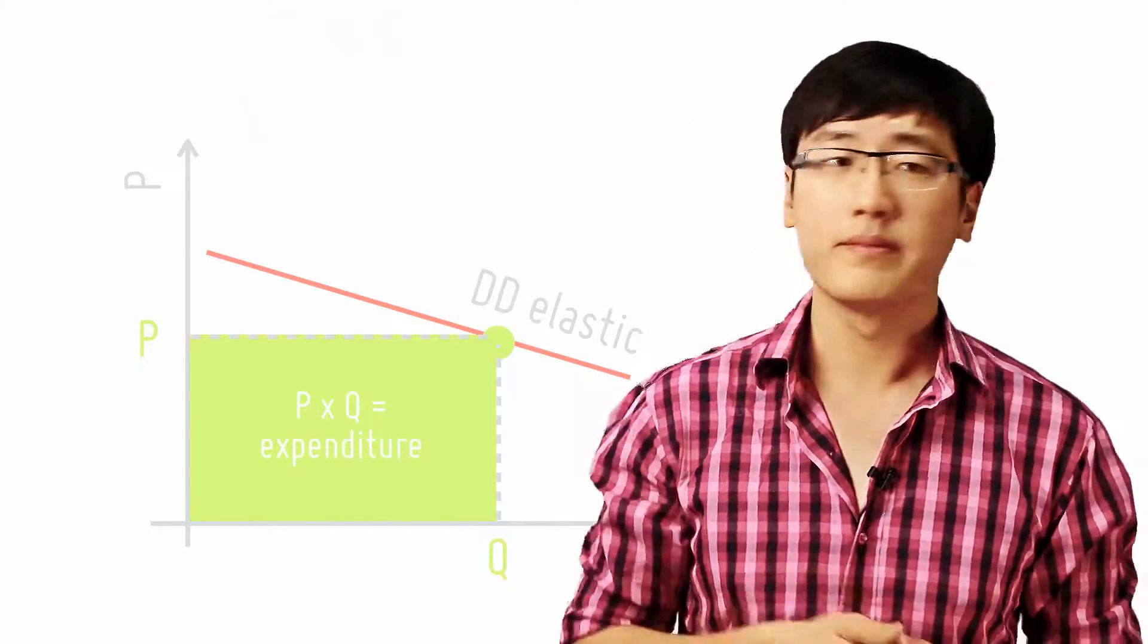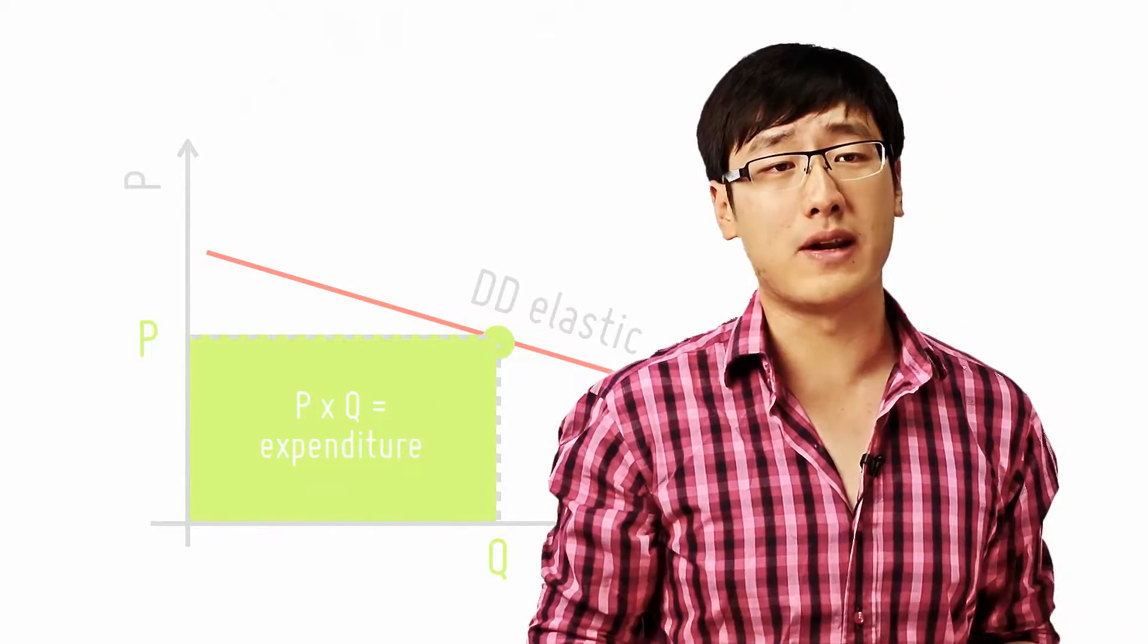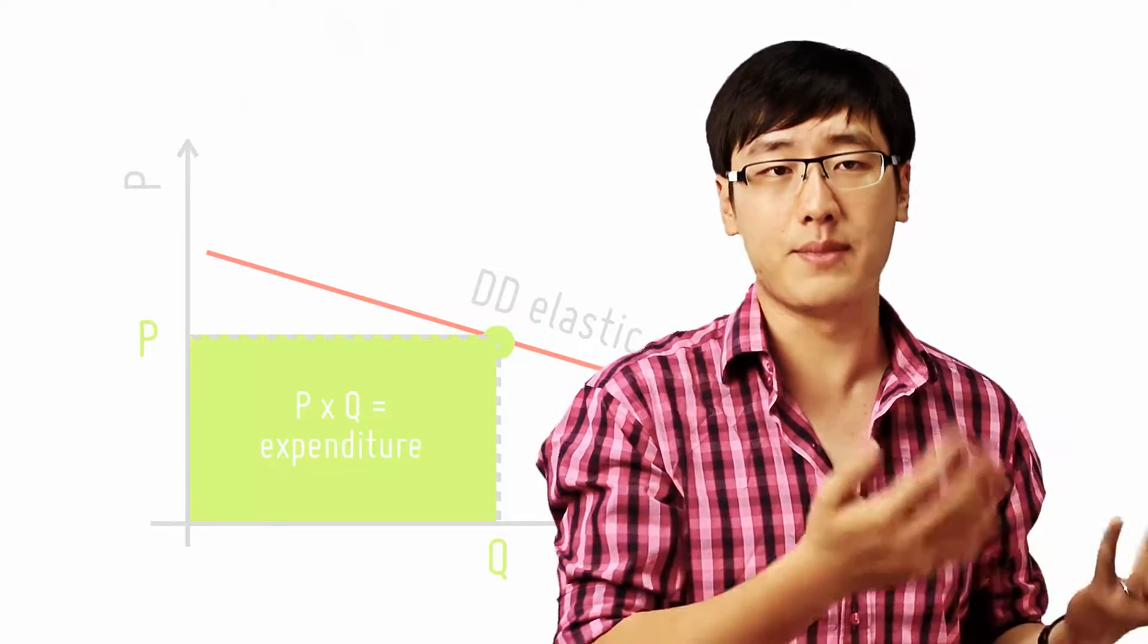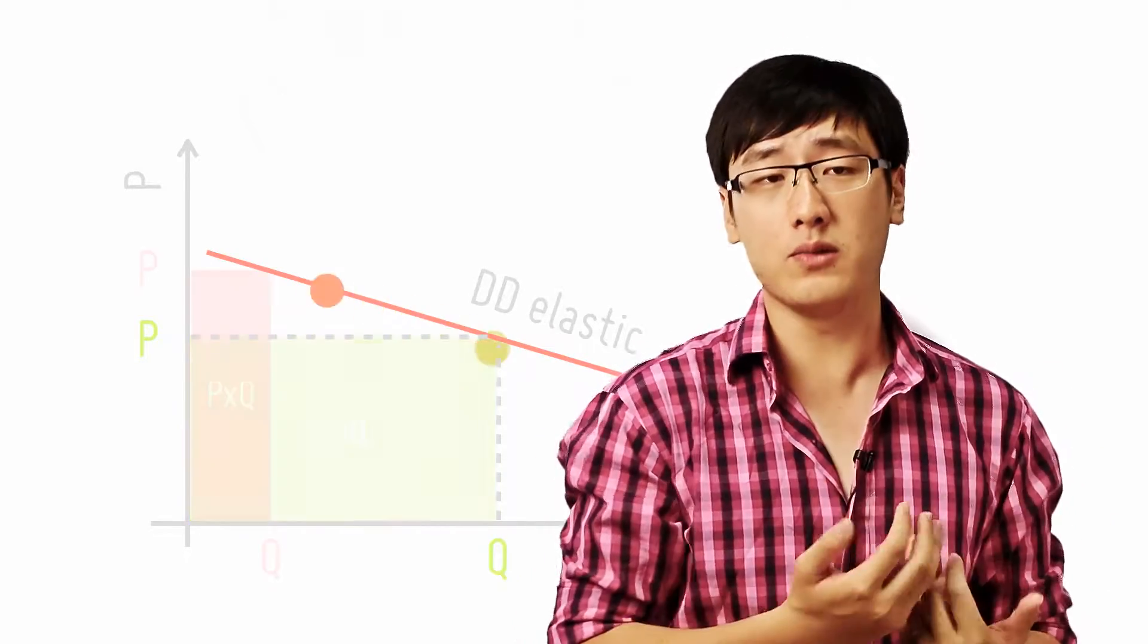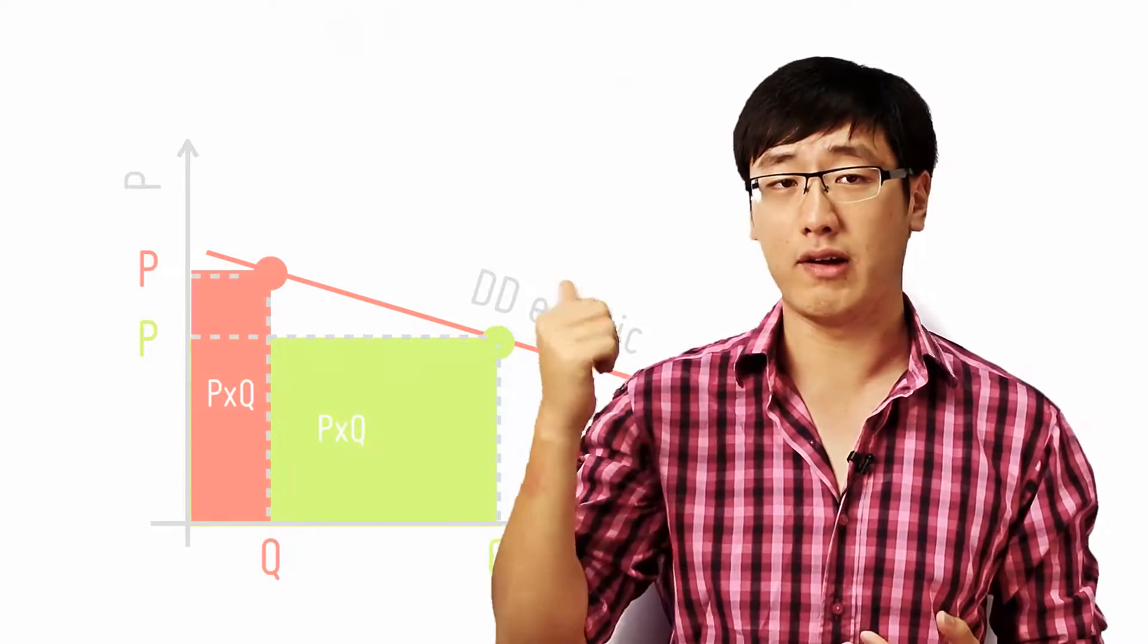Now look at this diagram. The green rectangle shows the original expenditure, which is the original price times the original quantity. When we increase the price, we get a new total expenditure which is the red rectangle.